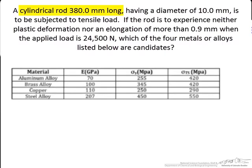If we take a look at our problem statement, we have a cylindrical rod that's 380 millimeters long. It's going to have a diameter of 10 millimeters. We anticipate that it's going to be subjected to a tensile load. The rod is not to experience plastic deformation, and it's not to have an elongation more than 0.9 millimeters, and the applied load is going to be 24,500 newtons.